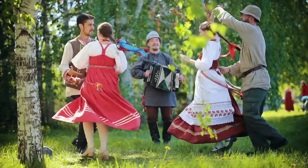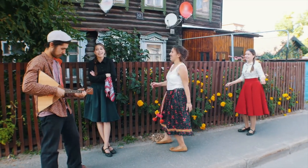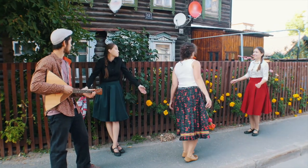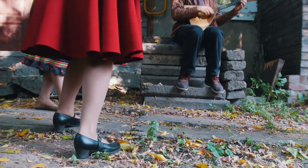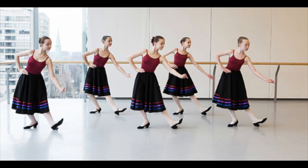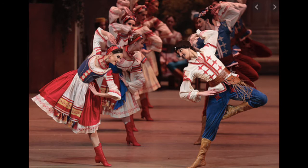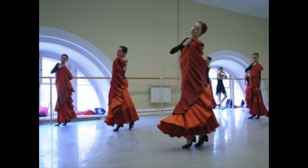Folk dance movements are much more intrinsic and the knowledge is mainly embodied, meaning the dancing is more often passed down through muscle memory. Folk dance often incorporates improvisation but rarely becomes someone's profession. It doesn't always require specific shoes — boots or everyday shoes, depending on the region, are what is typically worn. Now let's compare the similarities between ballet and folk dance, also known as the character dance list. It reflects and respects tradition and history. It requires in-studio training like ballet and embodied practice like folk dance. It's structured on a unique set of codified technique that pulls from ballet and folk movements and positions. However, there's very little written documentation about pedagogical methodology or repertoire. Character is designed for a proscenium stage to be incorporated into story ballets and requires unique short-heeled shoes.